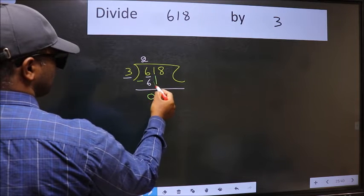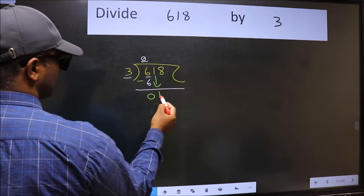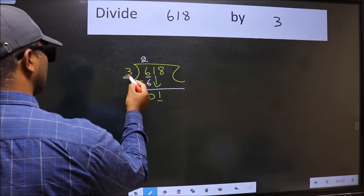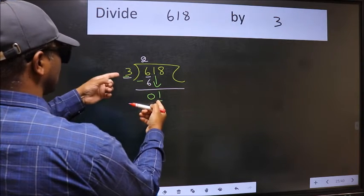After this, bring down the beside number, so bring 1 down. Now here we have 1 and here 3. 1 is smaller than 3.